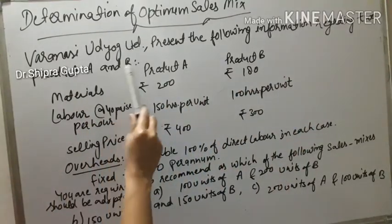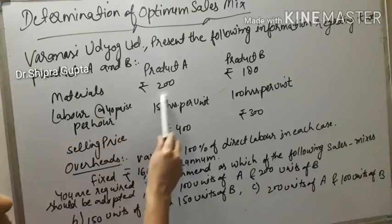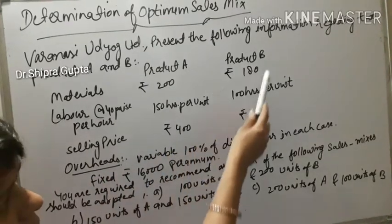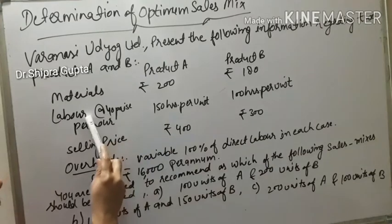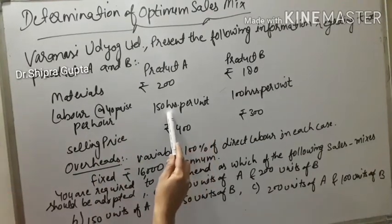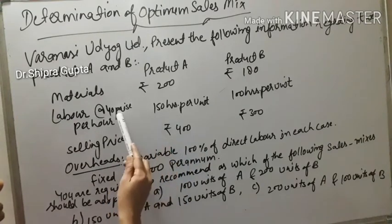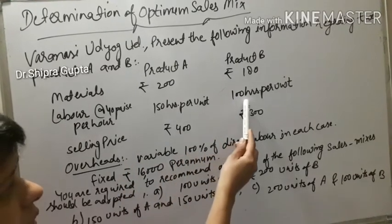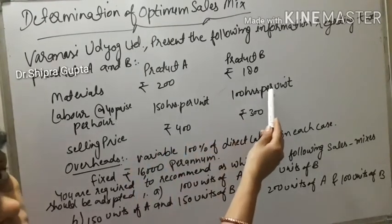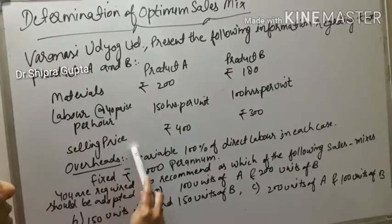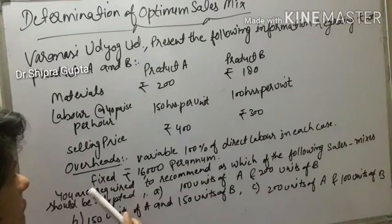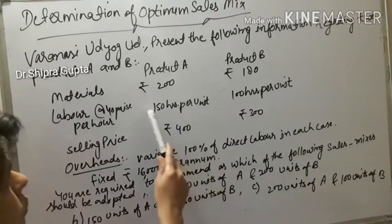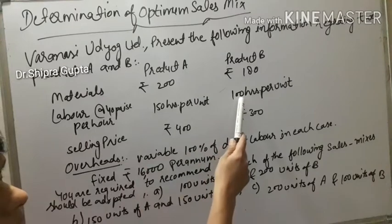In this question, Varanasi Uddyok Limited presents the following information for two products A and B. Product A: materials Rs. 200, labor at 40 paise per hour with 150 hours per unit, giving Rs. 60 labor cost. Product B: materials Rs. 180, labor at 100 hours per unit giving Rs. 40. Selling price for product A is Rs. 400 and for product B is Rs. 300. Variable overheads are 100% of direct labor.